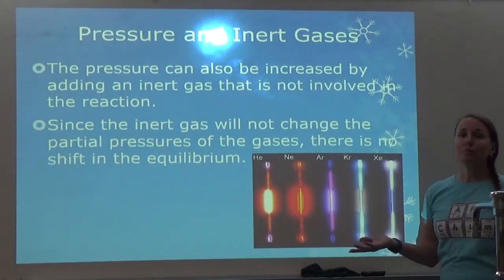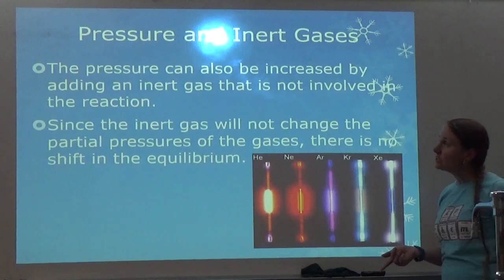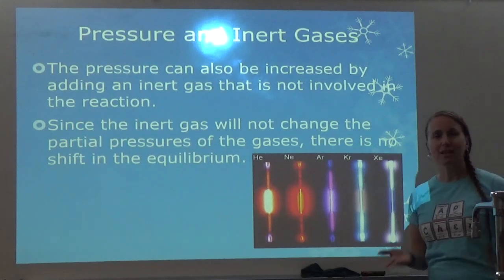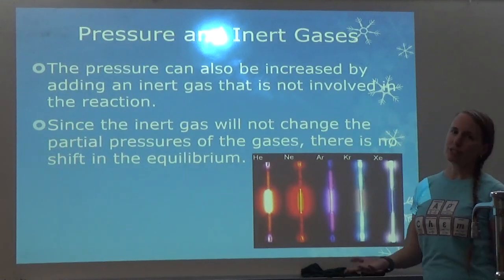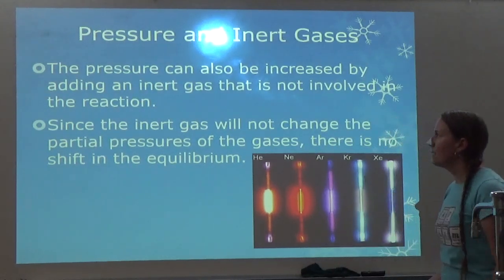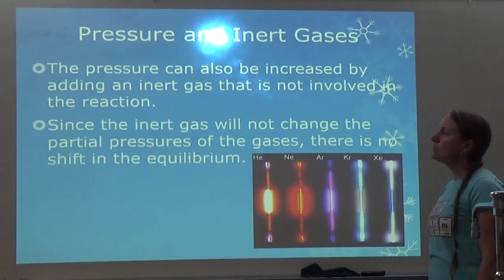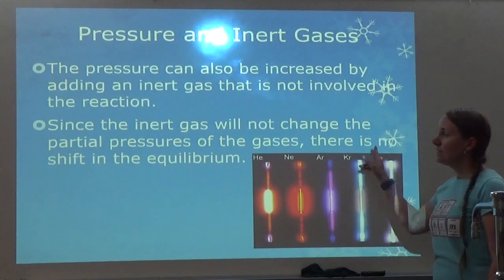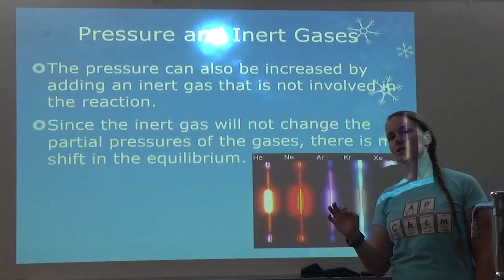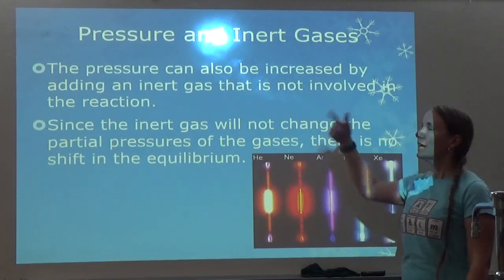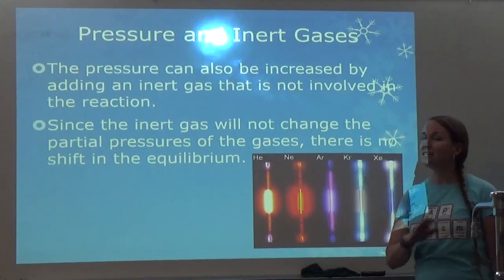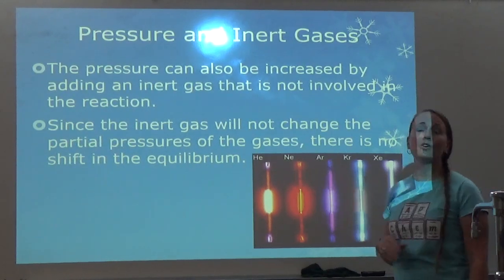Sometimes they'll talk about changing pressure by adding an inert gas instead of changing the volume. The pressure can also be increased by adding an inert gas not involved in the reaction — like a noble gas such as argon or helium, or sometimes nitrogen. Since the inert gas will not change the partial pressures of the gases, there is no shift in equilibrium. If pressure is changed by the addition of an inert gas, it doesn't actually change partial pressure, so there is no shift.